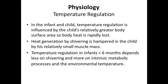Another big difference between the child and adult is the ability to regulate their body temperature. In the infant and child, temperature regulation is influenced by the child's relatively greater body surface area, so body heat is rapidly lost. While adults can generate heat by shivering, the child cannot do it as well due to his relatively small muscle mass. Also, temperature regulation in infants under six months of age depends less on shivering and more on intrinsic metabolic processes in the environmental temperature.